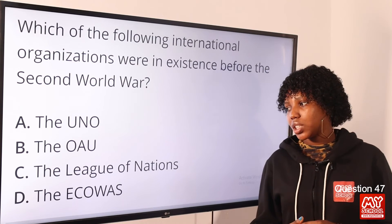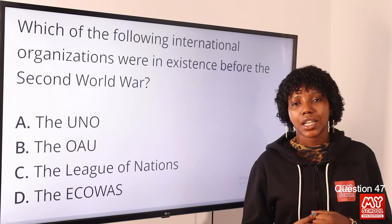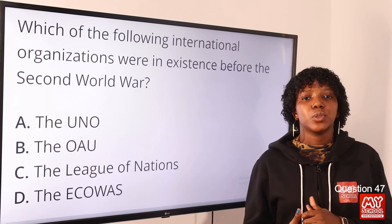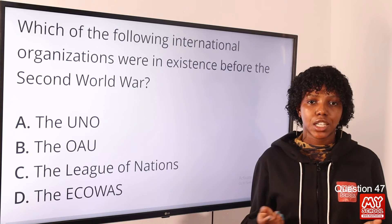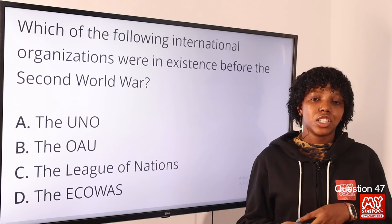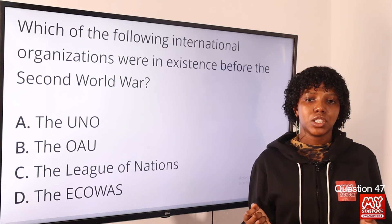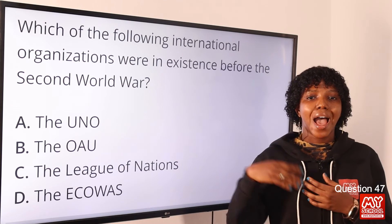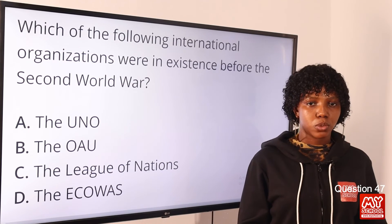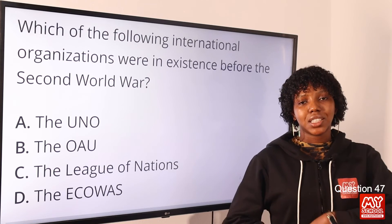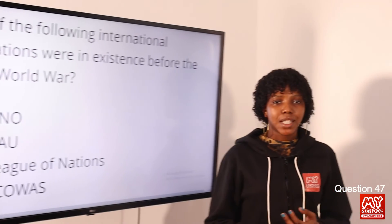Question 47: Which of the following international organizations was in existence before the Second World War? The answer is option C, the League of Nations, established in 1920. The Second World War was between 1939 and 1945. The United Nations was established in 1945, the OAU in 1963, and ECOWAS in 1975 — all after the Second World War. Only the League of Nations preceded it.